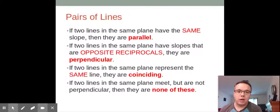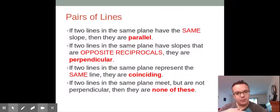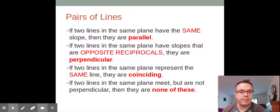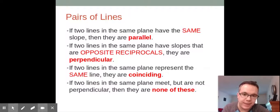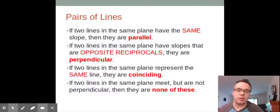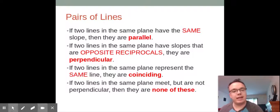The big thing there is same slope. If two lines meet at a right angle, what must have happened is their slopes are opposite reciprocals. So if one slope is four-fifths, the other slope must be negative five-fourths. It's both flipping and changing the sign on the fraction. That is the only way they can actually meet at a right angle to be perpendicular.